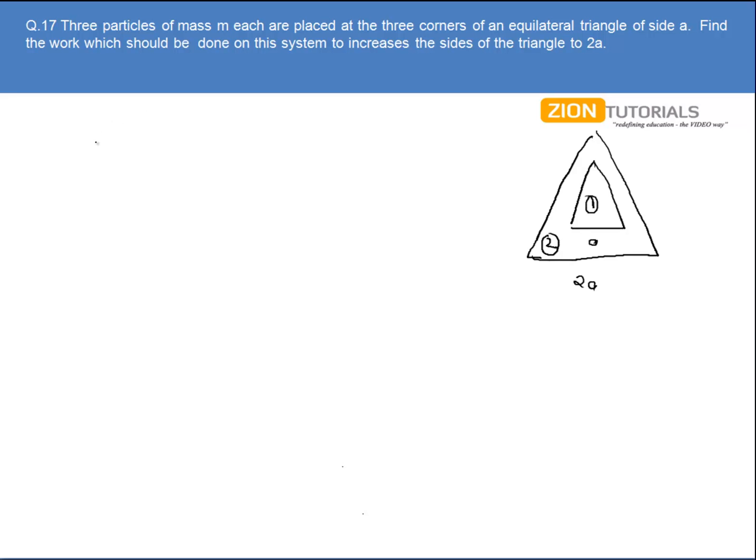Initially, the gravitational potential energy U1 can be written as minus G times M times M divided by A. This will be three times because there are three pairs between them. So this is the net initial potential energy.